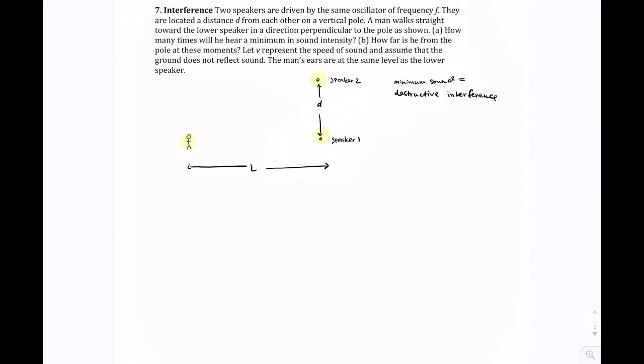And destructive interference has a mathematical thing where you can find it, and it's that when we have identical sources, so these speakers are in phase, the path length difference is going to be equal to half integers of the wavelength, so n plus one-half times the wavelength.